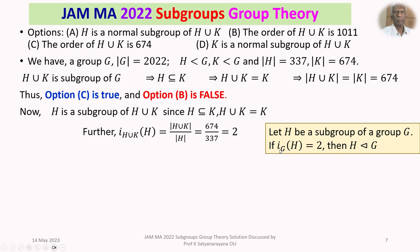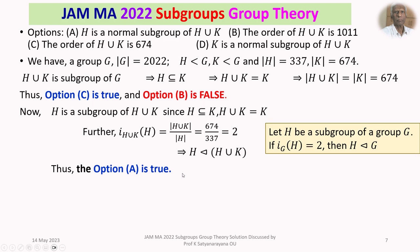Let us recall this result: if H is a subgroup of a group G and the index of H in G is 2, then H is normal in G. Using this theorem, H is a normal subgroup of H union K. That is Option A: H is a normal subgroup of H union K. So Option A is true.